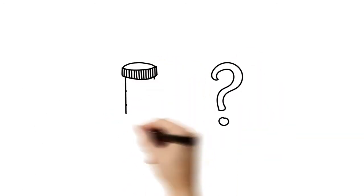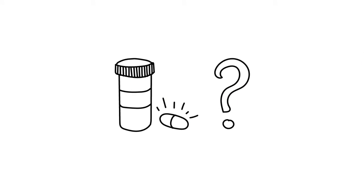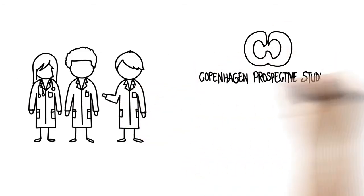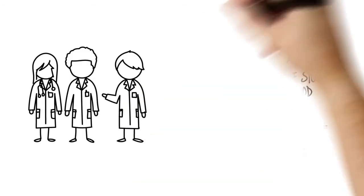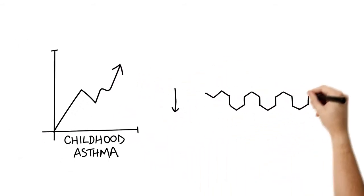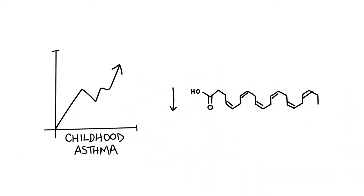But what if a simple supplement could prevent asthma in the first place? Researchers at Copsack and the University of Waterloo had a hunch that the rising rates of childhood asthma might be linked to our decreasing intake of long-chain omega-3 fatty acids.